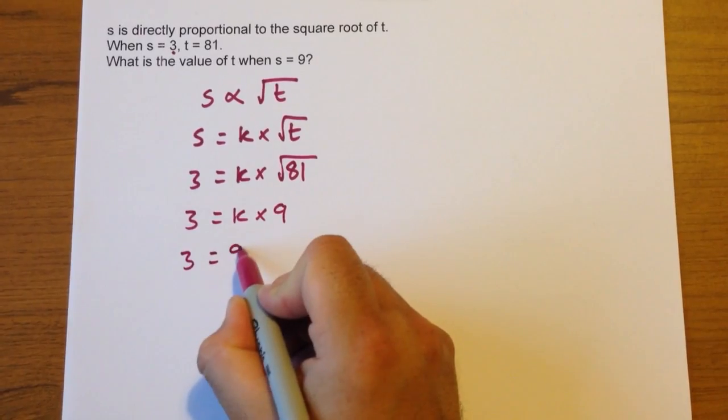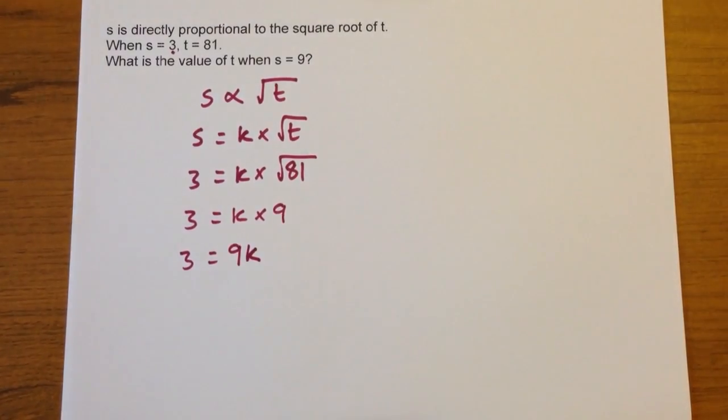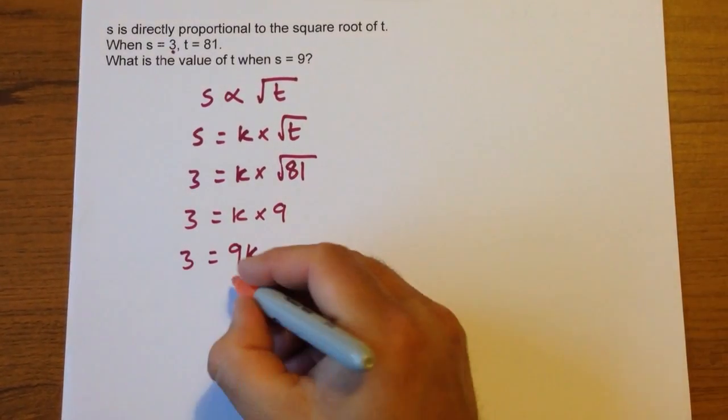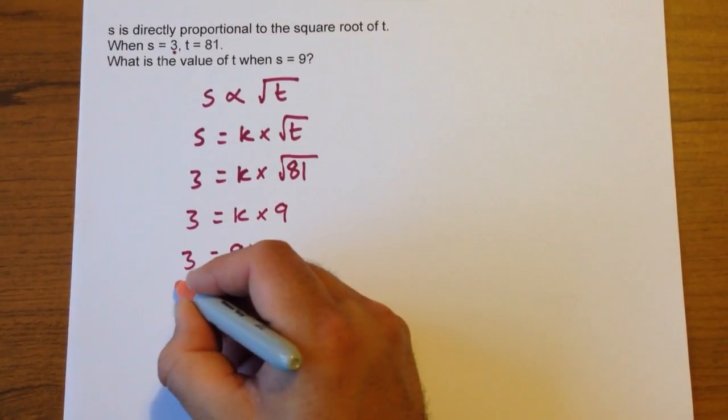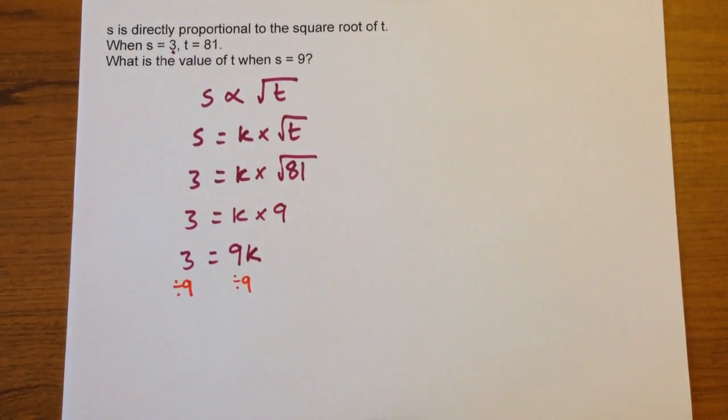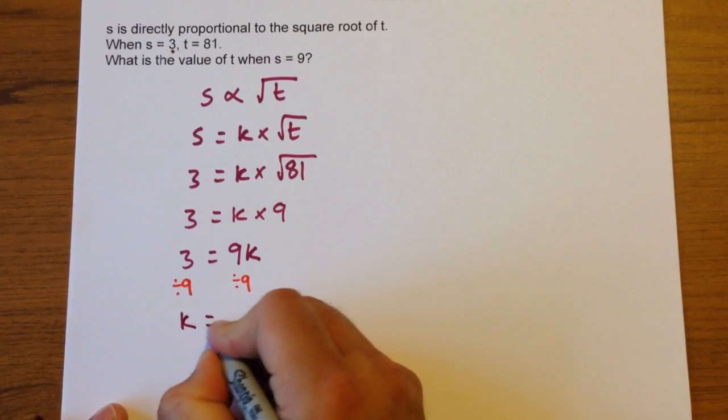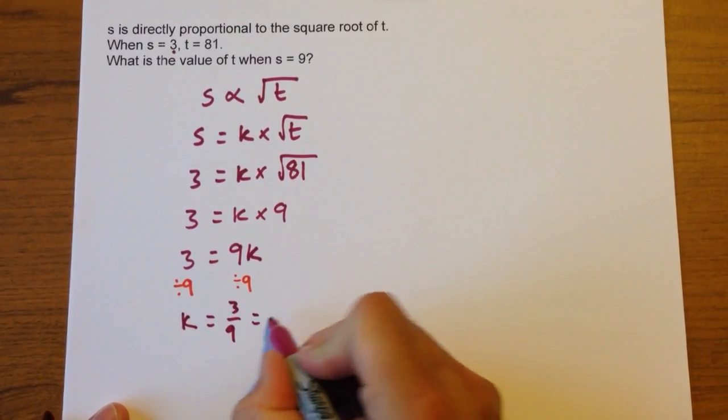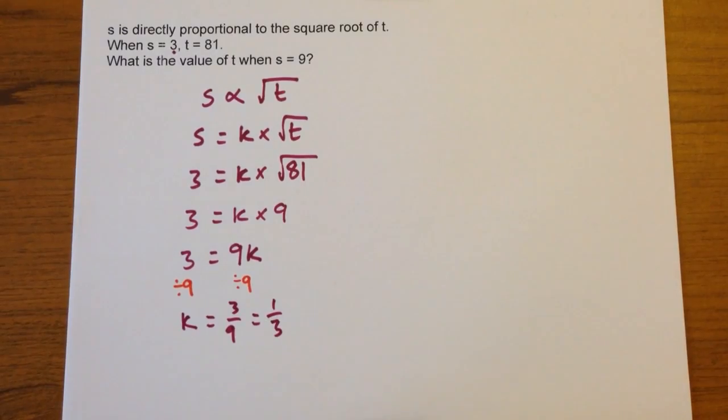In other words, 3 equals 9k. How do you get rid of that 9? We divide both sides by 9. And if we swap it round, we get k equals 3 divided by 9, which is the same as a third.